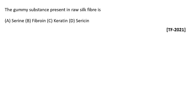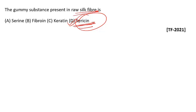The first question asks: the gummy substance present in raw silk is — option A: serine, B: fibroin, C: keratin, D: sericin. The correct answer is option D, sericin. Sericin is a protein produced by the silkworm Bombyx mori during silk production. The silk filaments are held together by this gummy substance known as sericin, also called silk gum. So option D is the right answer.